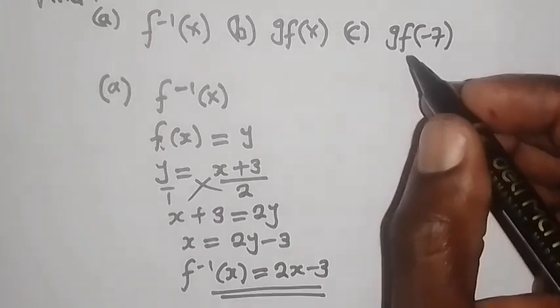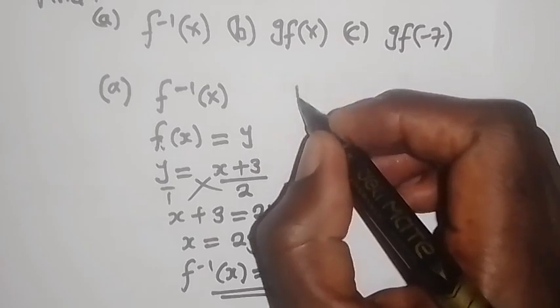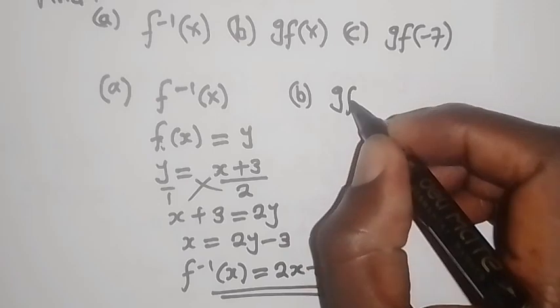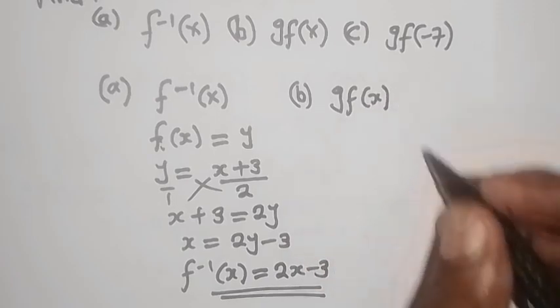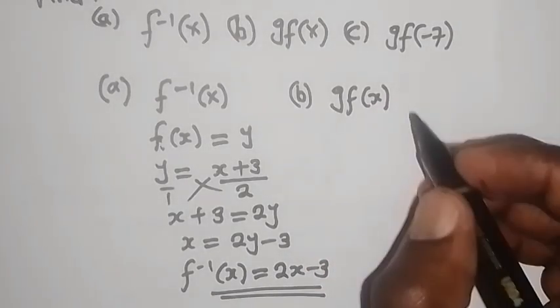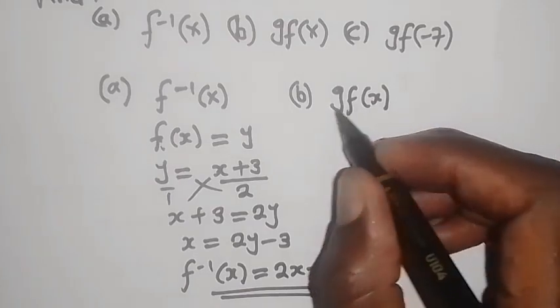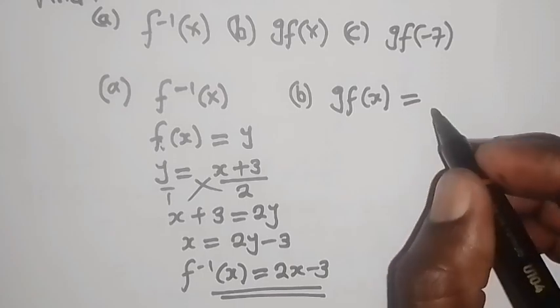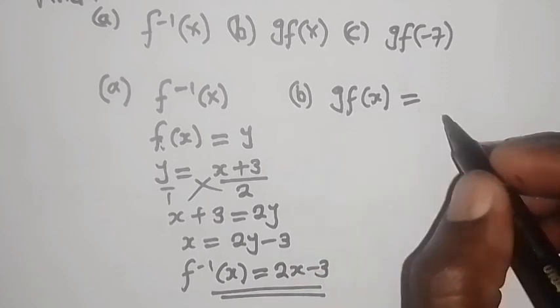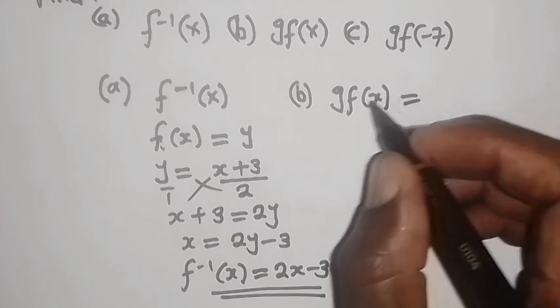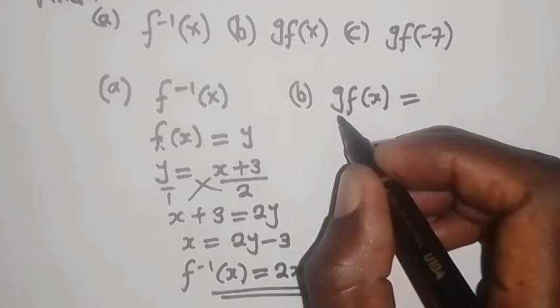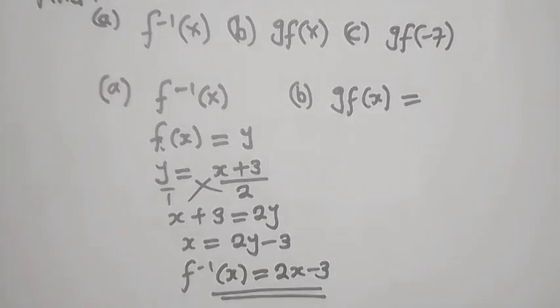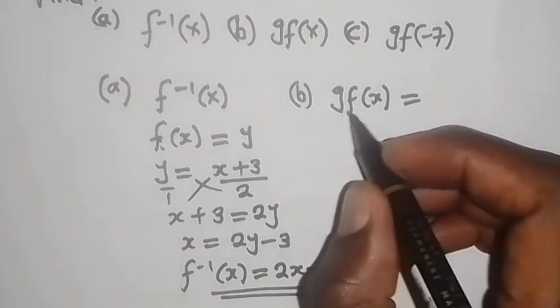And then now let's go to b. Now for b, they are saying g composite f of x. So now what you need to do is whenever you have two functions, this is a composite, two functions, more like you're multiplying. So what you're supposed to do is, first of all, you write the function, you write the function g, which is this one.